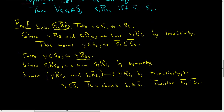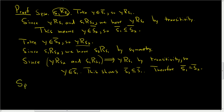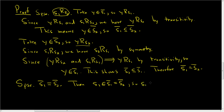That was the forward direction of the proof. Now suppose the equivalence class of s1 equals the equivalence class of s2, and we need to show s1 is related to s2. Well, s1 is in its own equivalence class by reflexivity, and since the two classes are equal, s1 is also in the equivalence class of s2. By definition of equivalence class, that means s1 is related to s2. And that completes the proof.